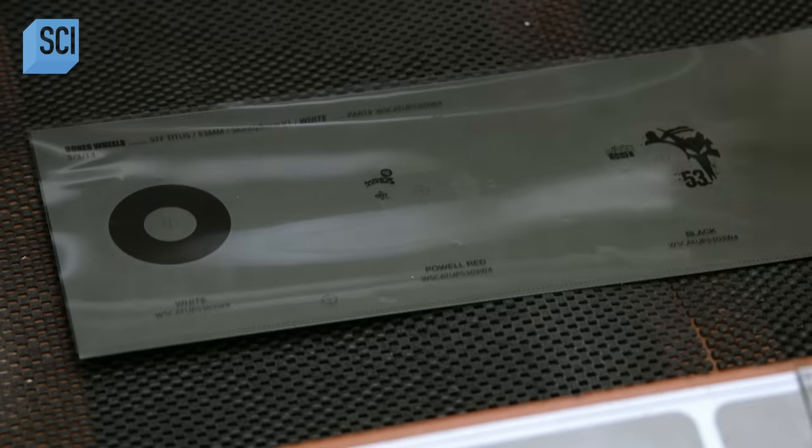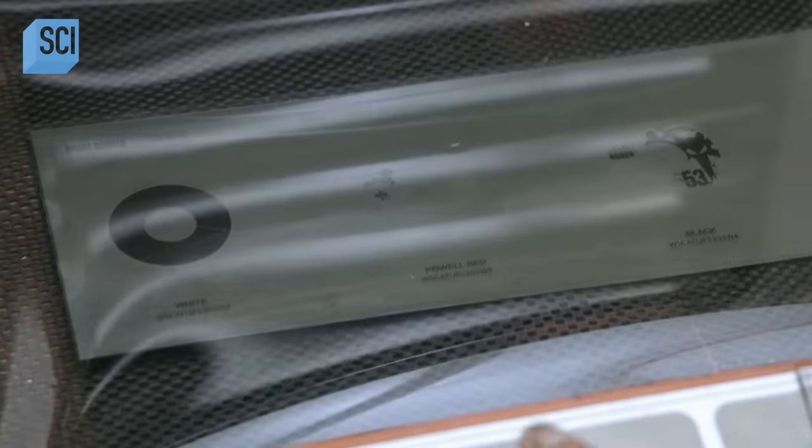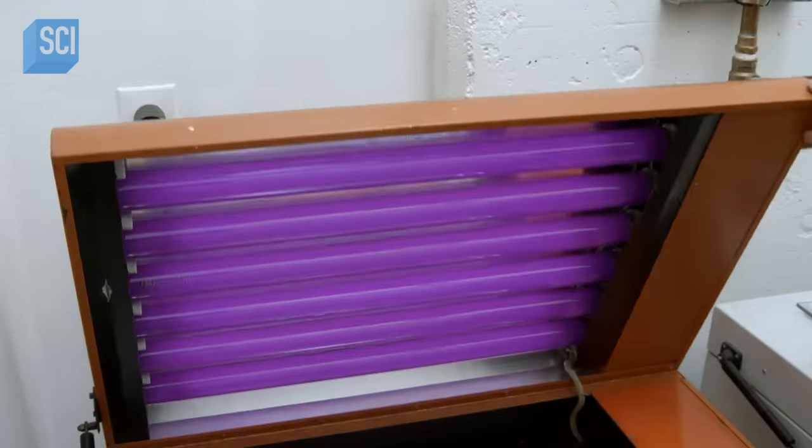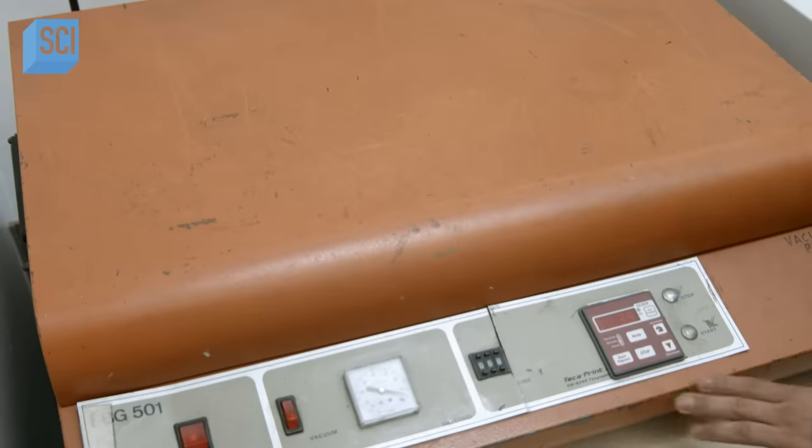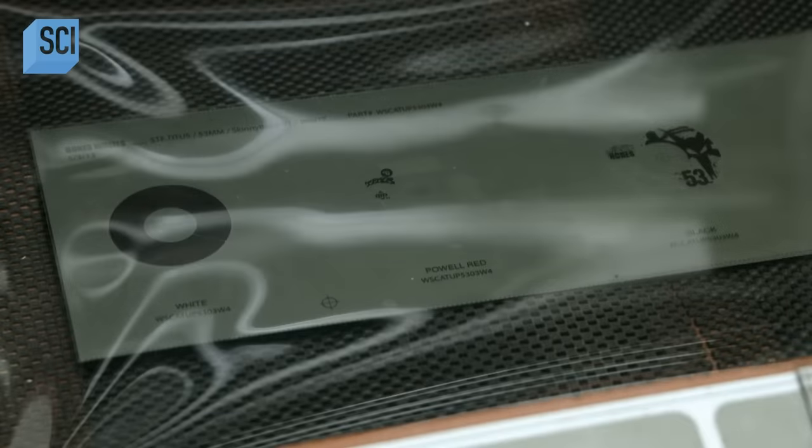He places the film negative on the plate inside a UV light chamber. He closes the lid and activates the UV light. This triggers a photochemical reaction that transfers the image from the negative to the plate.